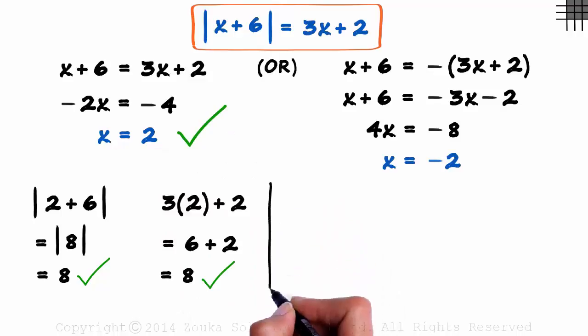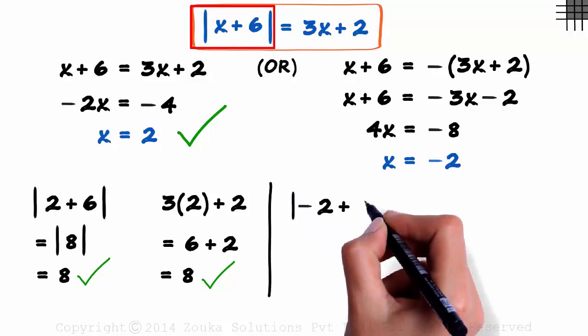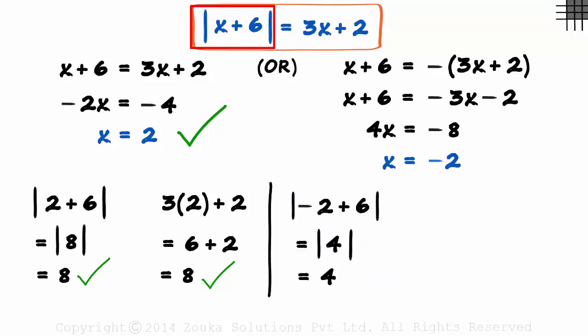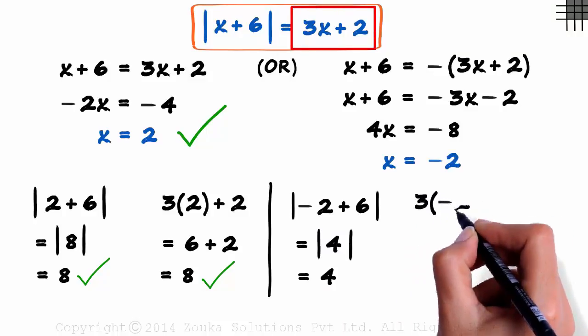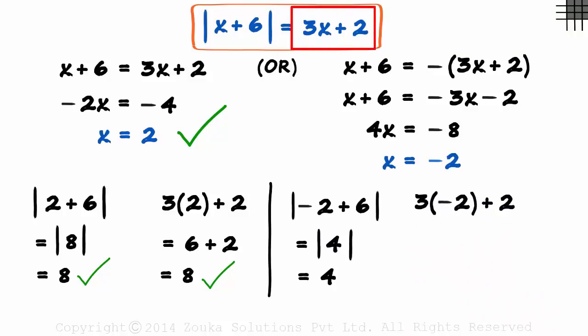Now we can jump to the second case of x equal to minus 2. The left hand side will be the absolute value of minus 2 plus 6. That gives us 4. And the right hand side will be 3 times minus 2 plus 2. And that gives us minus 4. Not 4.